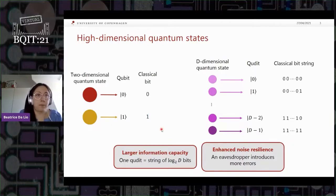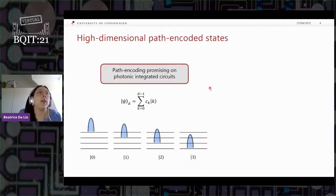So this is actually the first big improvement that we can get going high dimensional: the larger information capacity. And then it turns out we also have enhanced noise resilience, which means for instance if we use this kind of states for QKD application, the eavesdropper actually introduces more error in our channel, which means it's easier to detect him. There are many ways, many degrees of freedom that we can use to encode this kind of states. And one very promising degree of freedom is path encoding, and this is because it's the main degree of freedom used in photonic integrated circuits. So this is how maybe schematically it works. We can imagine that we have several spatial modes and our photon is living in either one of those, and this is how we can construct a computational basis. And then our general state will be described by a general superposition on these modes.